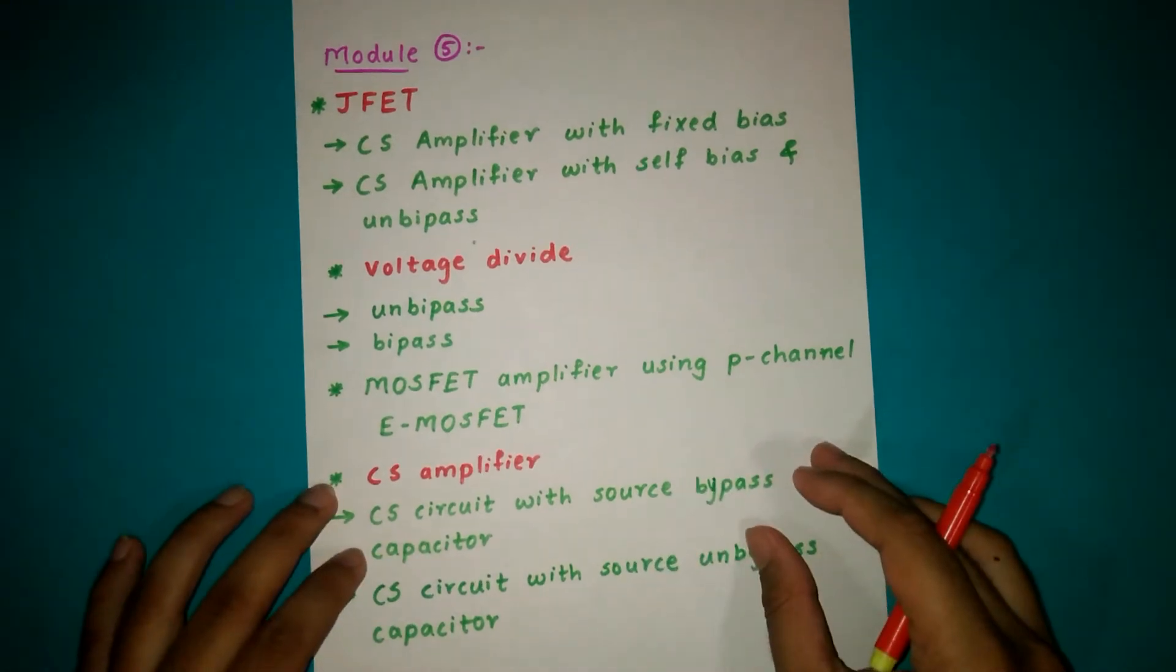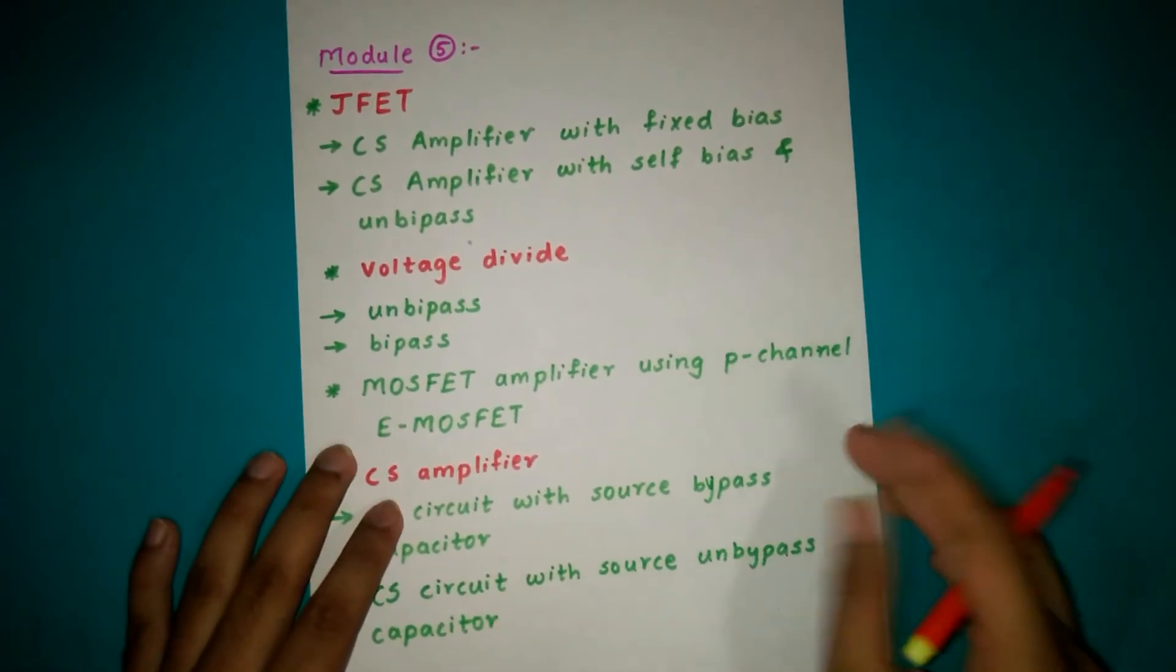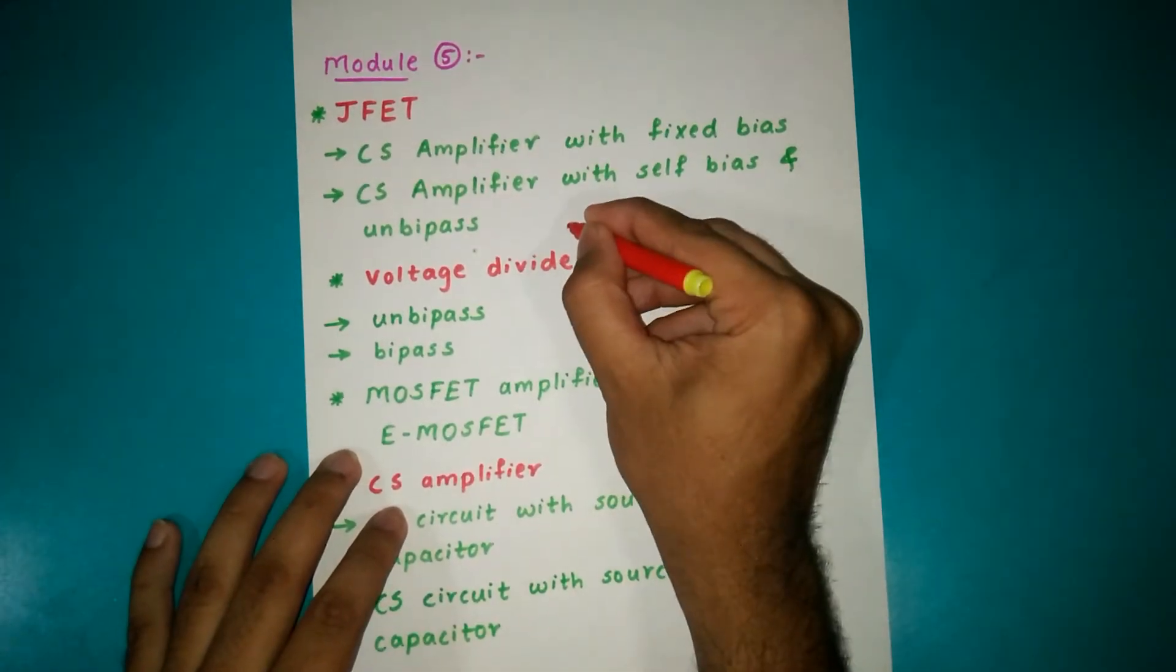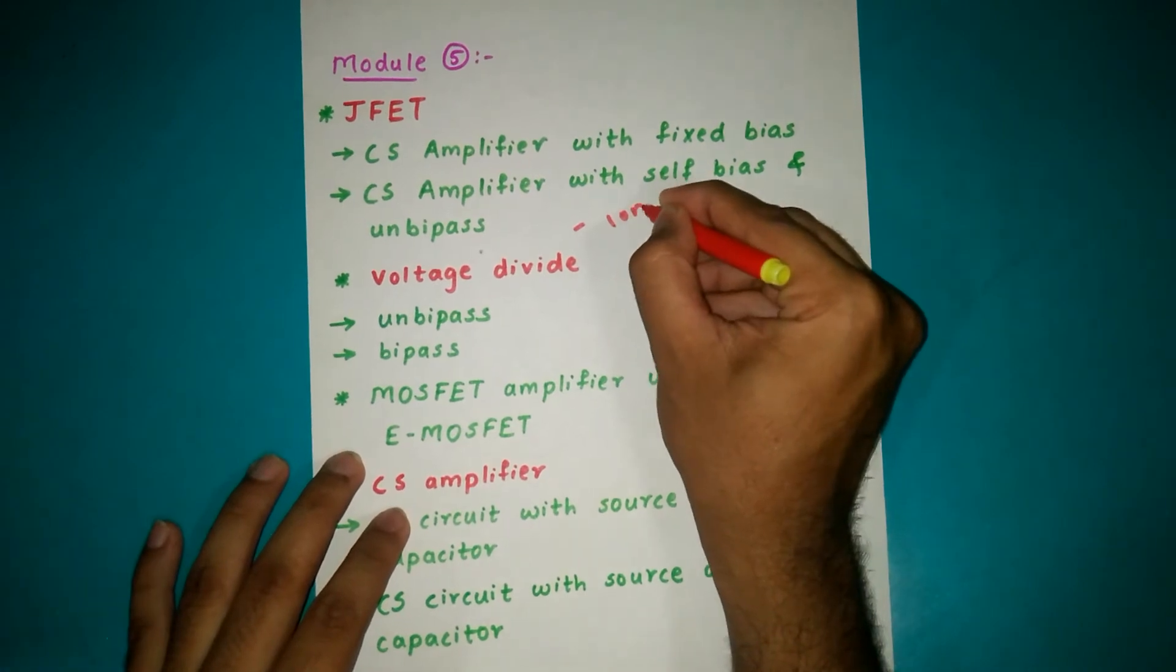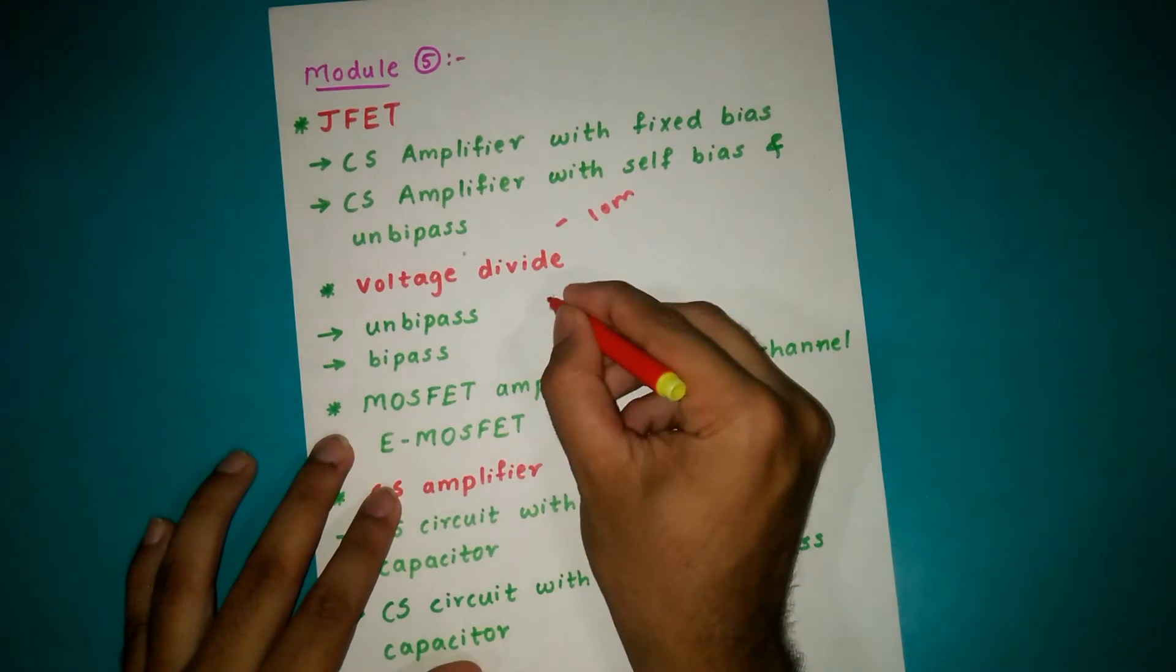CS amplifier with fixed bias and CS amplifier with self-bias and unbypassed. From this you will get one question for 10 marks. From voltage divider you will get unbypassed, bypassed for 10 marks.